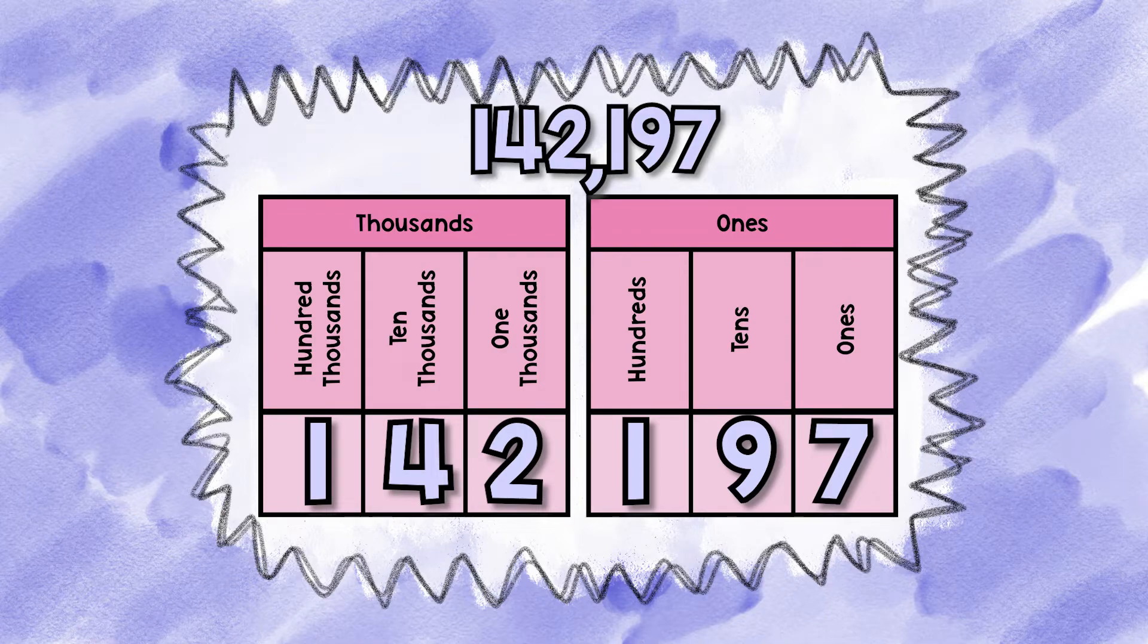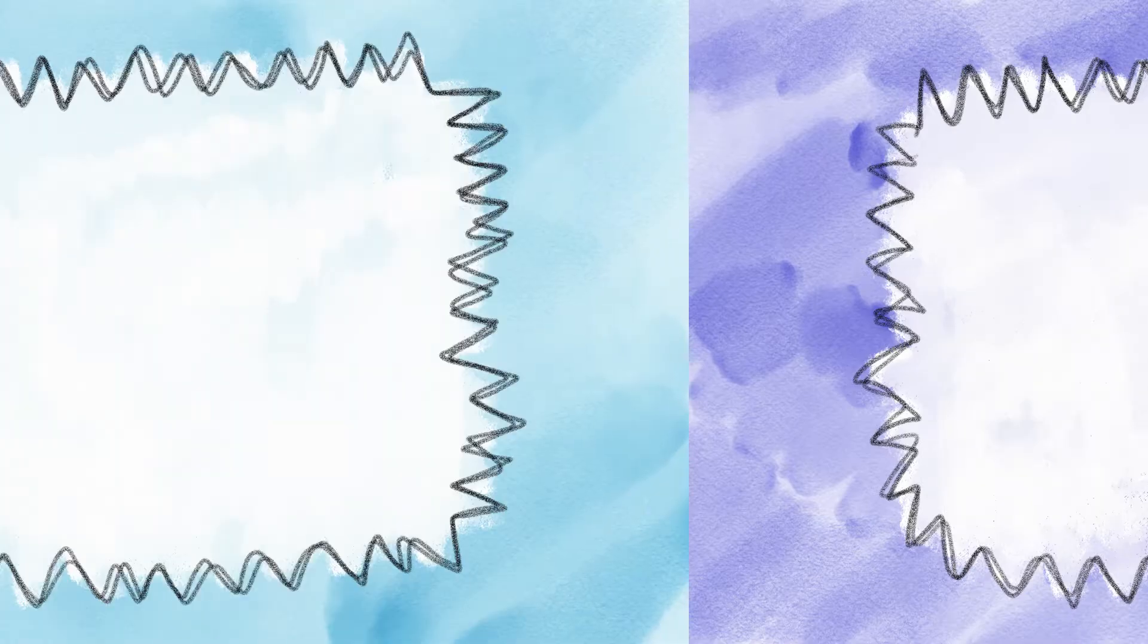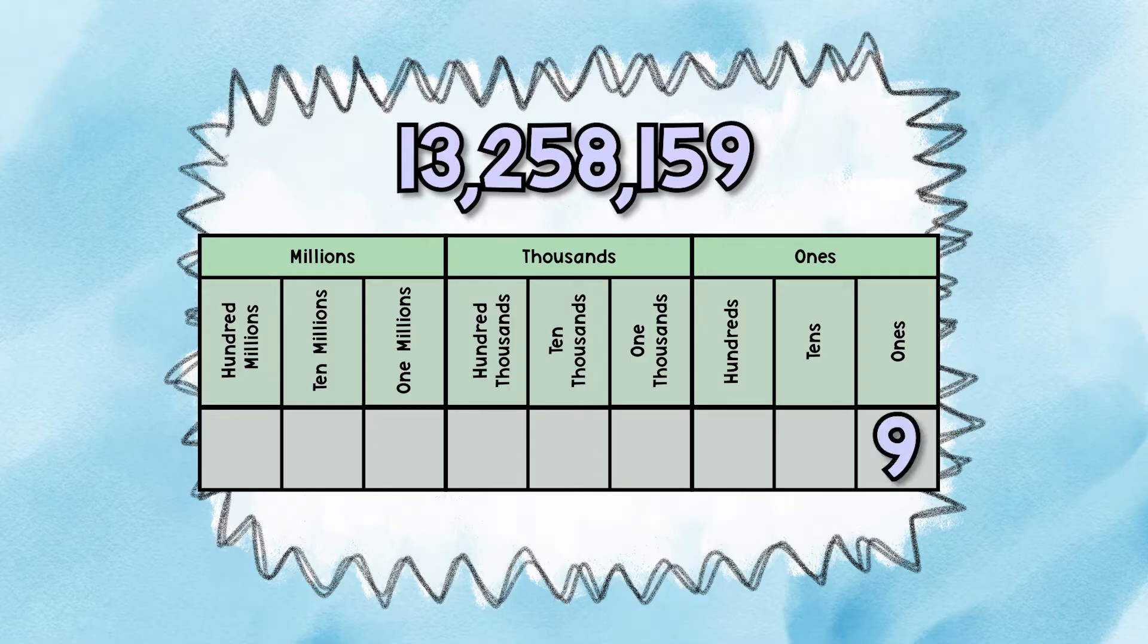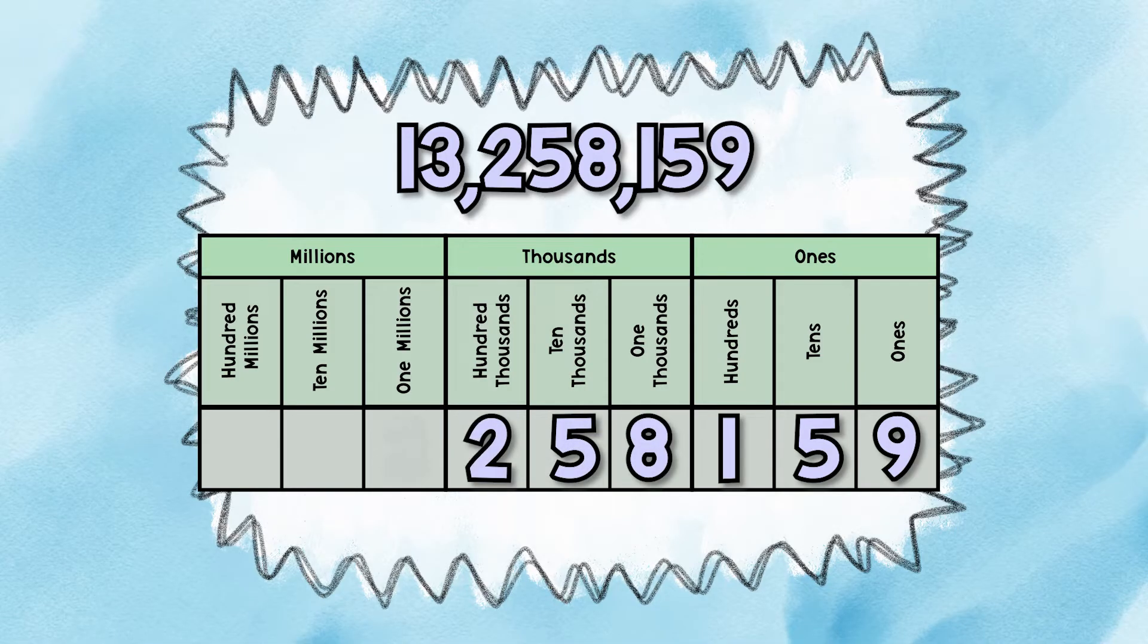All right, let's try a really large number. 13,258,159. There's nine in the ones place, five in the tens place, one in the hundreds place, eight in the one thousands place, five in the ten thousands place, two in the hundred thousands place, three in the one millions place, and one in the ten millions place. Did you get it correct?